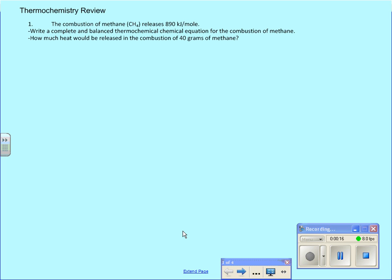The first one deals with thermochemical equations and being able to use the energy aspect into it with the stoichiometry. So let's take a look at the first part here. It says, the combustion of methane releases 890 kilojoules per mole. Write a complete and balanced thermochemical equation for the combustion of methane. So the first thing you've got to remember is, what is combustion?